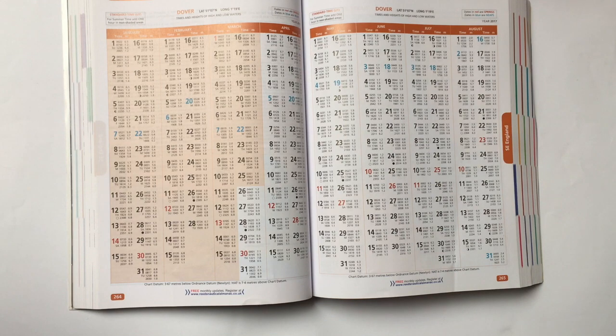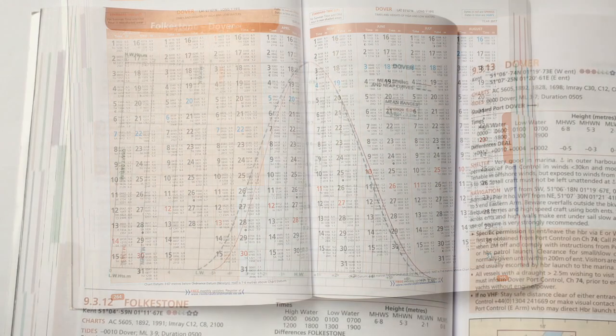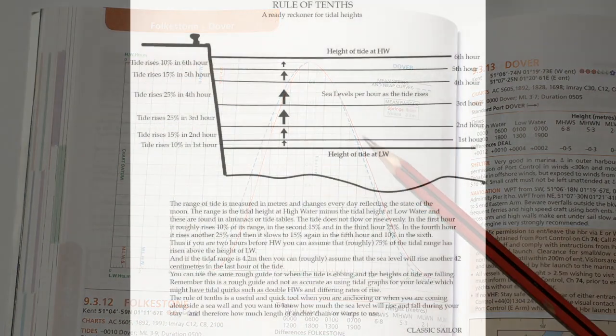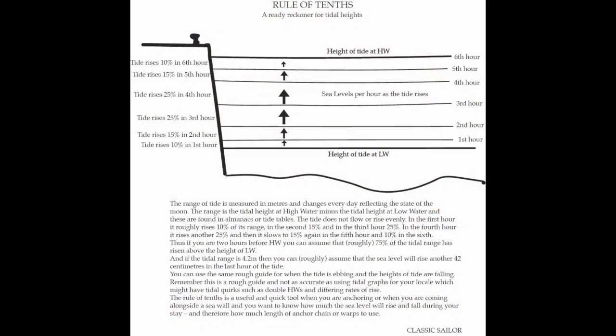But suppose you want to know quickly how much tide has come in or how much is left to go out. The proper way to do that is with an almanac and tide tables and then using a tidal curve. But there is a ready reckoner which you can use as a rough guide in your head. It's very easy to do.